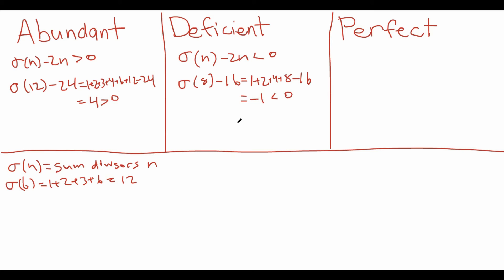Finally, you can probably guess what the definition of a perfect number is because the definition is sigma n minus 2n not greater than, not less than, but exactly equal to 0.